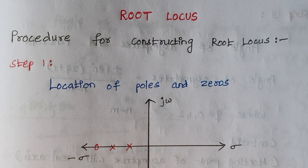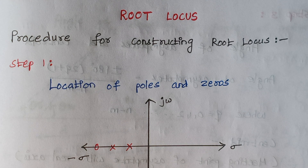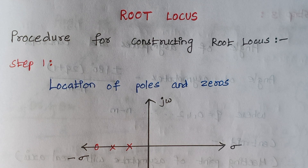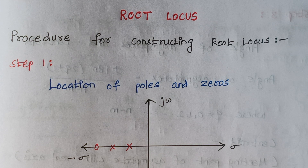Hello viewers, I am Kousalya. Today we are going to discuss the procedure for constructing root locus. First, let me explain what root locus is. Root locus is about adjusting the location of the roots of the characteristic equation, or in other words, the location of the poles — specifically, the poles of a closed-loop transfer function — in order to make the system give the desired or predicted output.